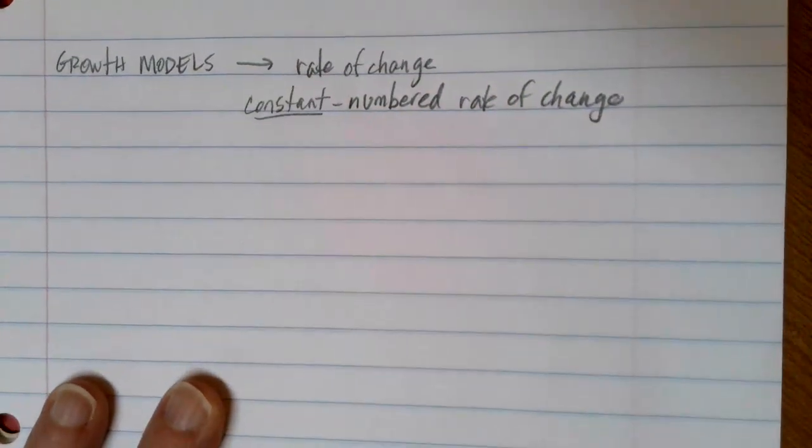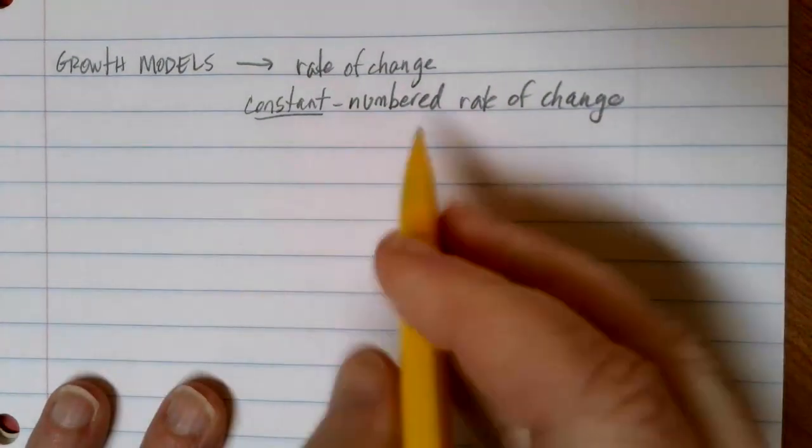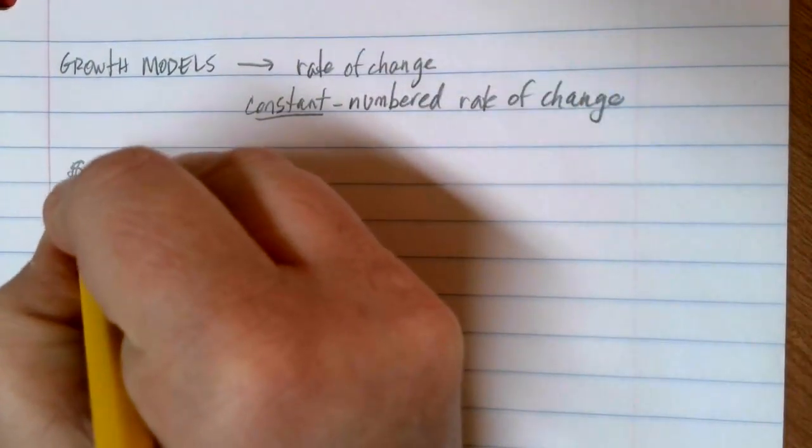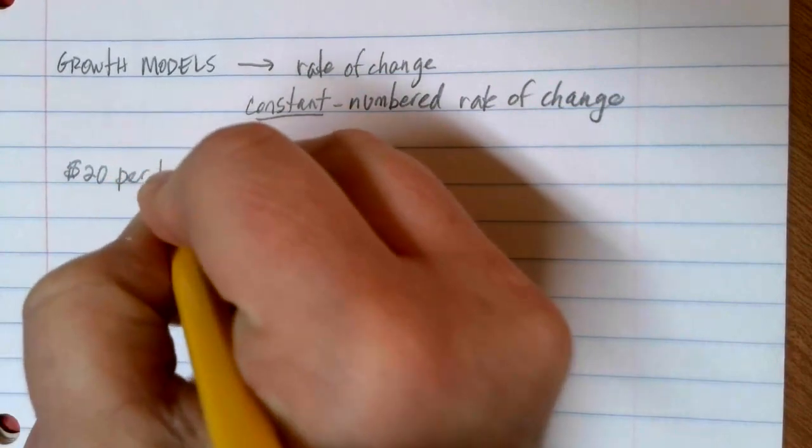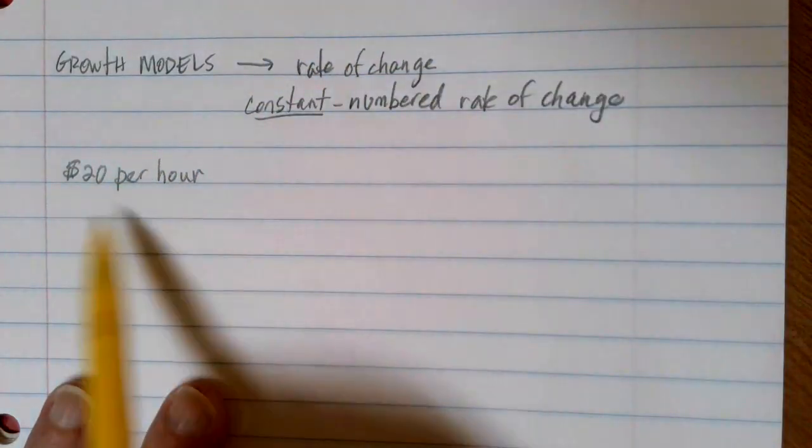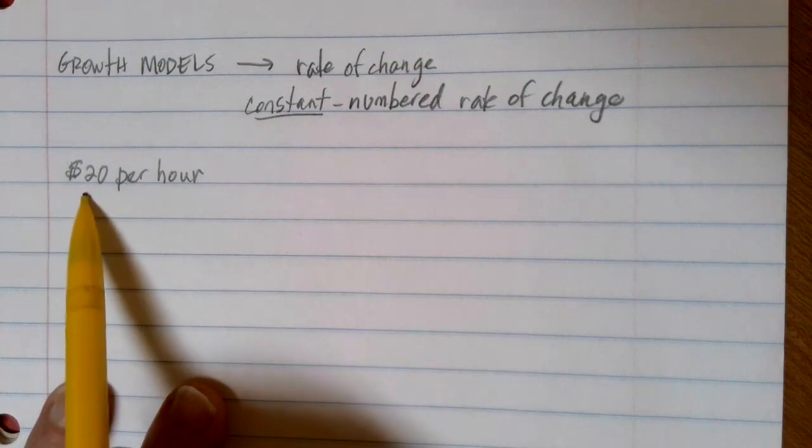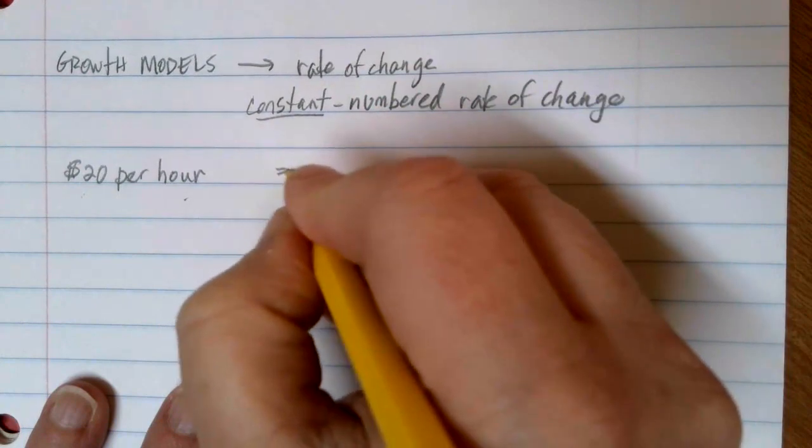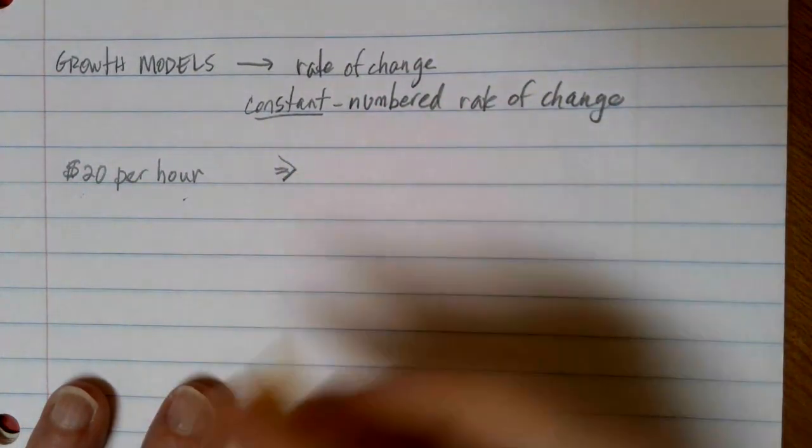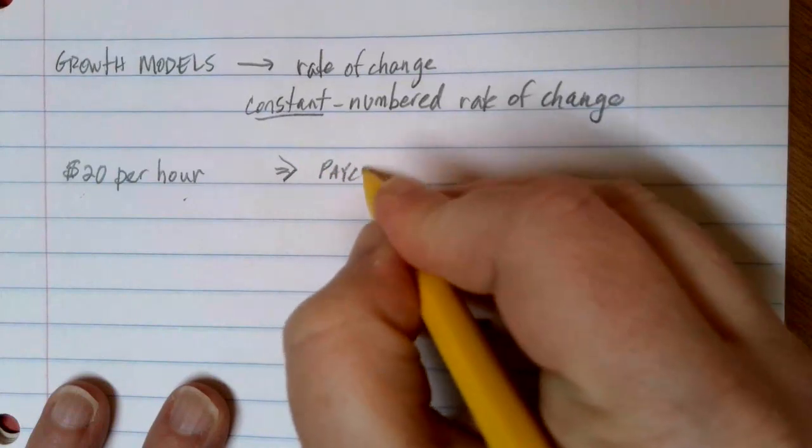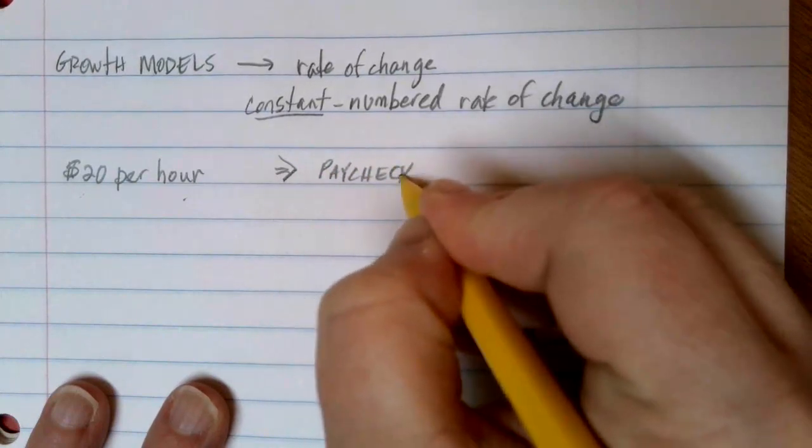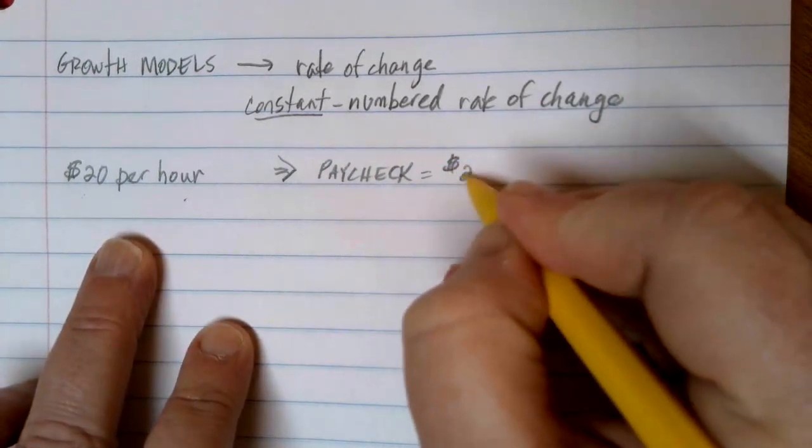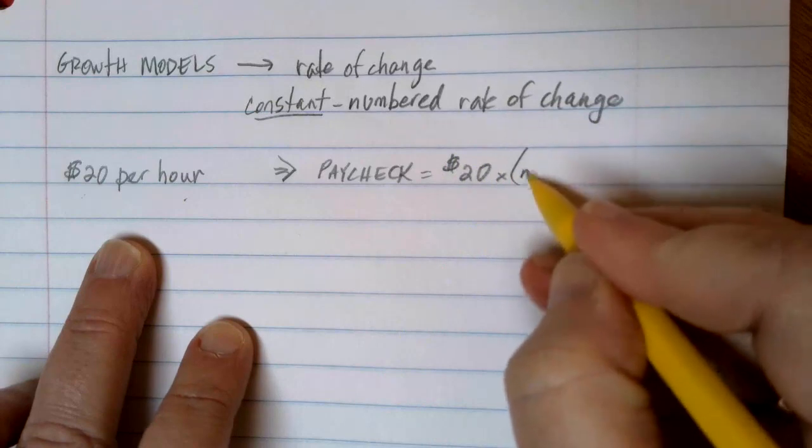Let's look at a couple of examples and think about how we would figure them out. Let's suppose that you are working a part-time job and you earn a total of $20 for every hour that you work, $20 per hour is your wage. This is a rate of change because we're changing the amount of money based on the number of hours that we work. If I wanted to use this rate of change to figure something out, probably what I want to figure out is what my paycheck is going to be. My paycheck is going to be equal to that $20 per hour, and then I'm going to multiply it by the number of hours that I work.